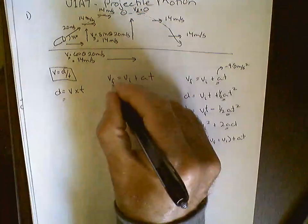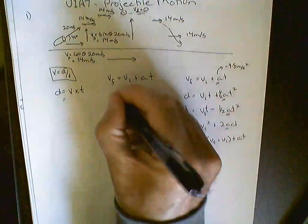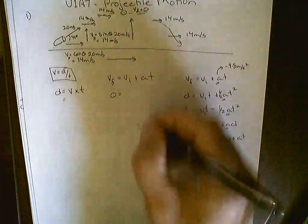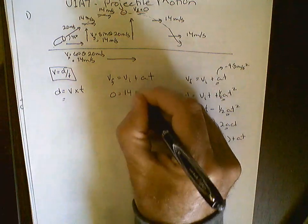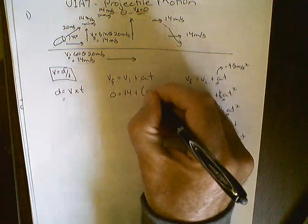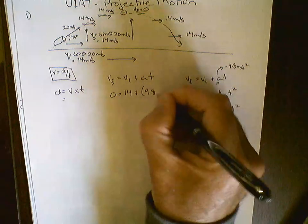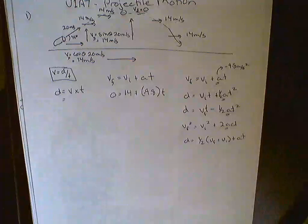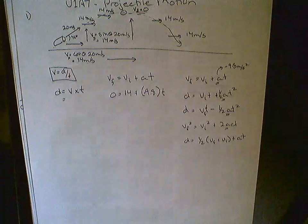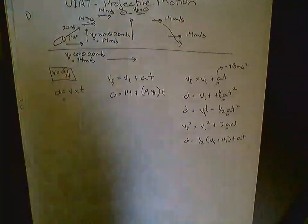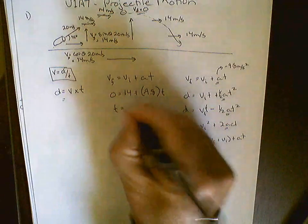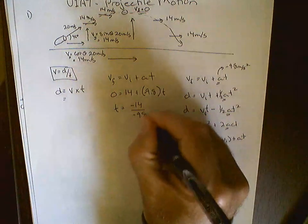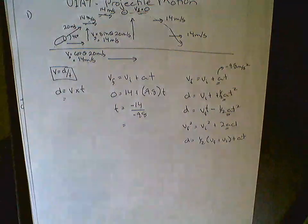We know our velocity final when it gets to the top is 0. We know our velocity initial in the Y direction is 14. We know that our acceleration due to gravity is negative 9.8. So if we rearrange this, we'll pull the 14 over to the other side and we'll divide by 9.8 and we will get a time.